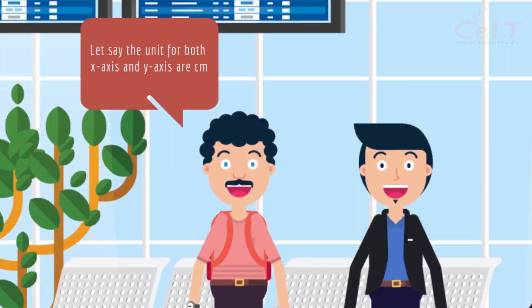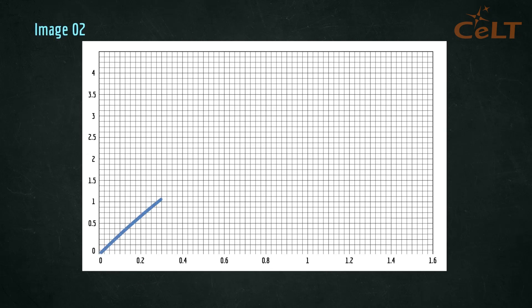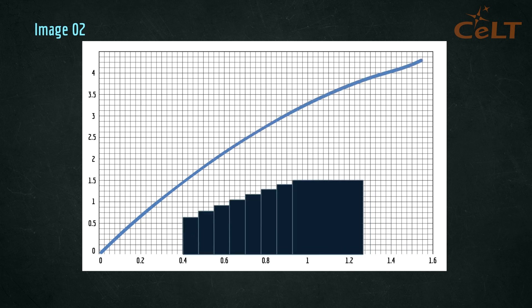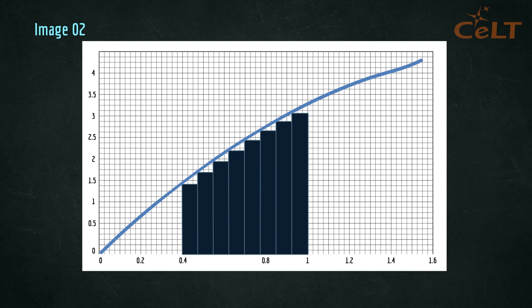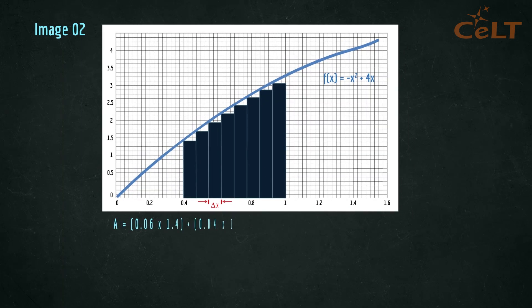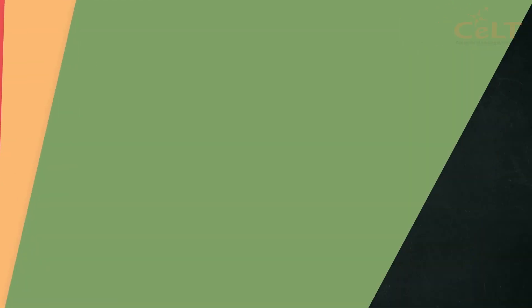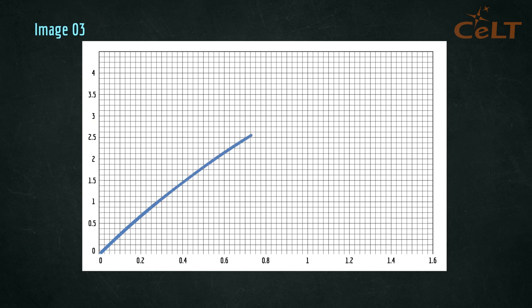Let's say the units for both the x-axis and y-axis are the same. Since we already know the area of a rectangle, we could adapt slices with width Δx like this. But the answer won't be very accurate when we calculate — so make the slices smaller.